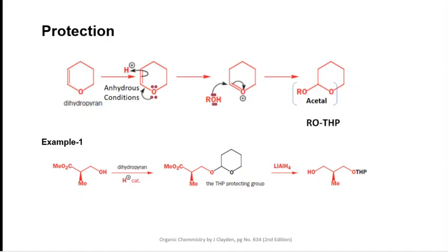Even weak nucleophiles can react because the oxonium ion is highly reactive. Here the hydroxyl group, utilizing its lone pair of electrons, attacks on the electrophilic carbon atom of the oxonium ion, and the OH group is now substituted — transformed into an OTHP group. In other words, the hydroxyl group is now transformed into an acetal group, and it is now protected for various reaction conditions.